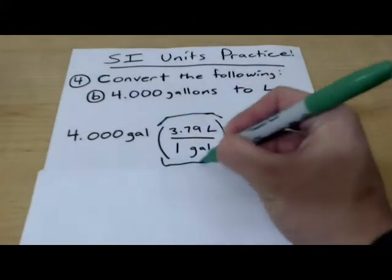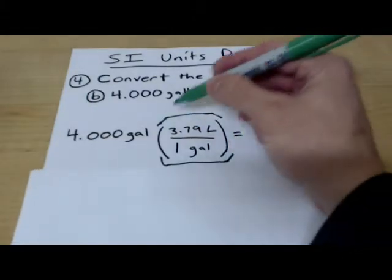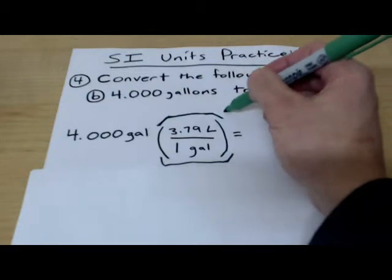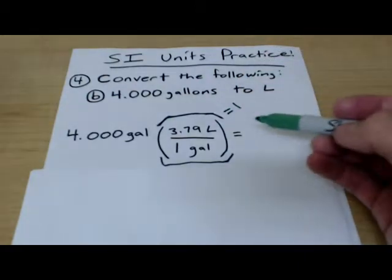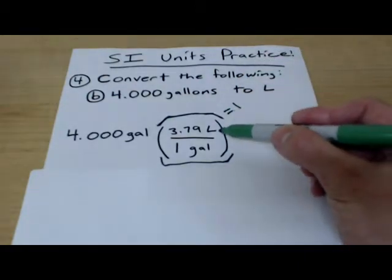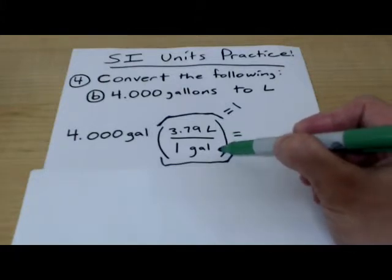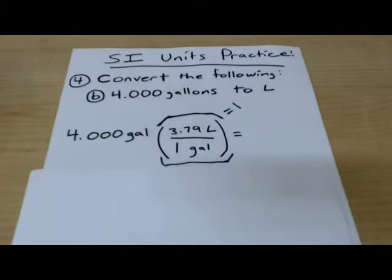And we could do this because this whole term here is equal to one. If you have two containers and one has 3.79 liters and the other one has one gallon, they're going to have the same amount in them, roughly.